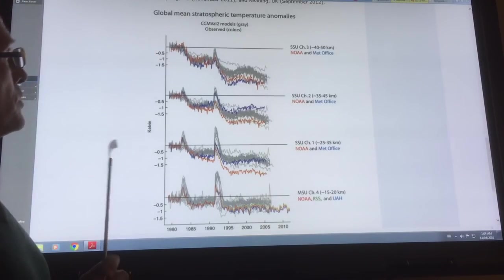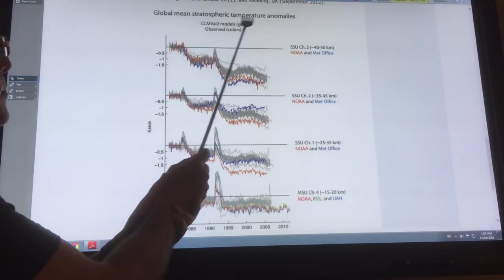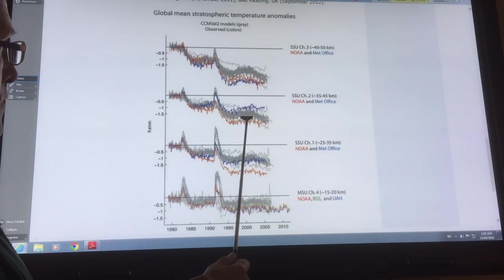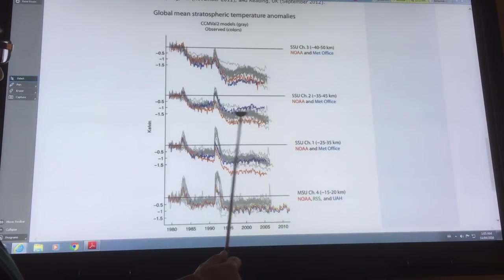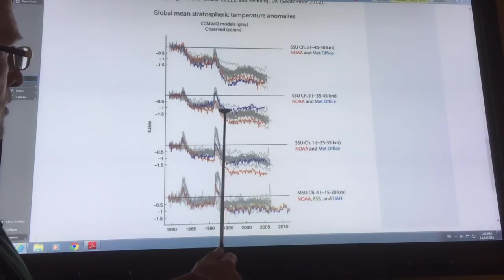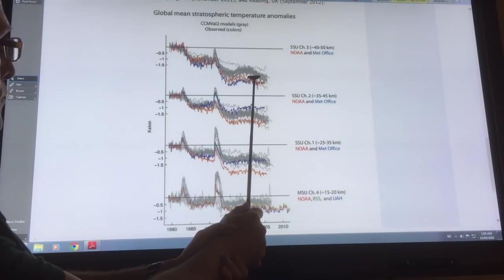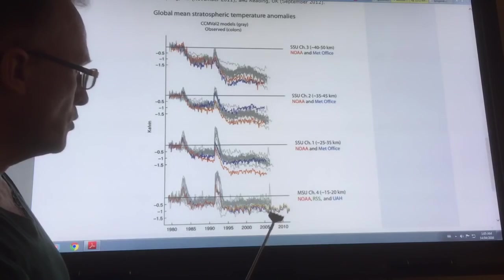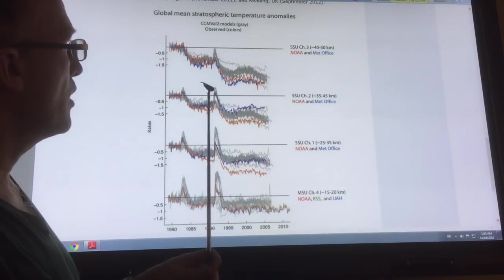This shows you the global mean stratospheric temperature anomalies at different altitudes. At 15 to 20 kilometers up, we've lowered the temperature about a degree or so. If you go up higher, the temperature is lowered even more. At 35 to 45 kilometers and 40 to 50 kilometers up high, the cooling is greater. So the stratosphere cools, and it cools more as you go up higher.